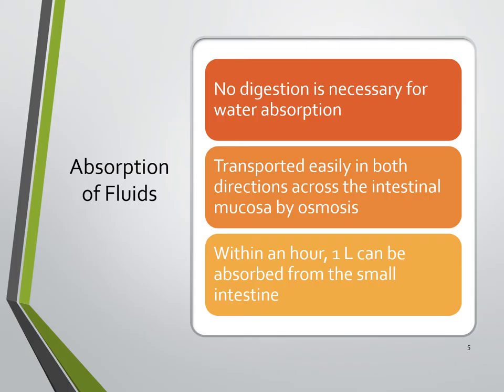No digestion is necessary for water absorption — it easily passes through cellular membranes and is transported in both directions across the intestinal mucosa by osmosis. Within an hour, one liter can be absorbed from the small intestine. Normally, almost all fluid is absorbed with only a very small amount continuing through.